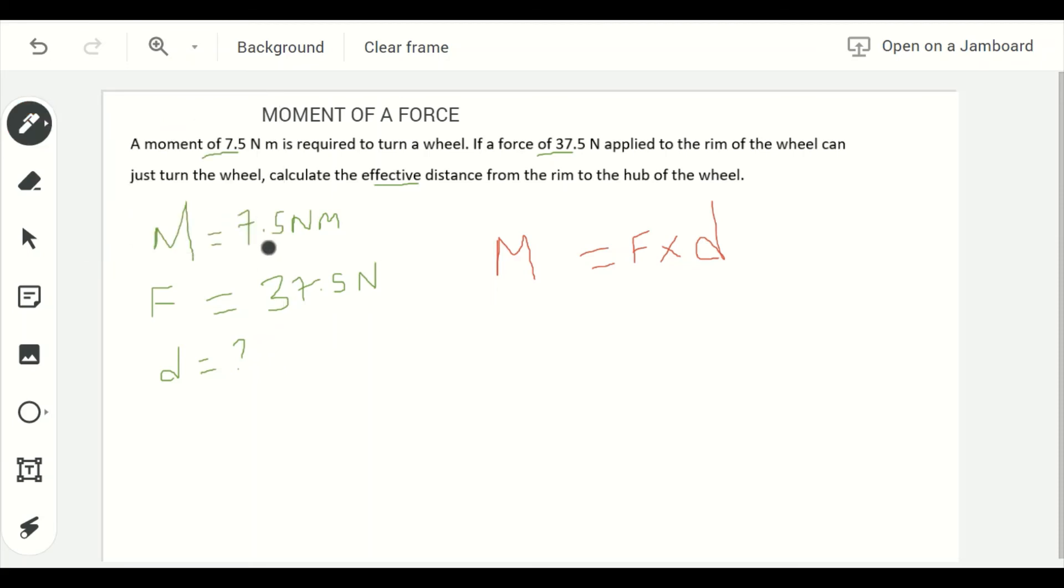My moment is 7.5, so I write out 7.5 newton meters equal to my force which is given as 37.5 newtons times my distance.